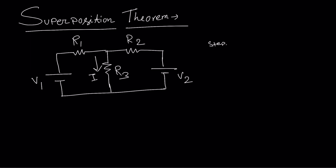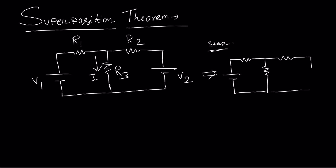Step one: we draw the circuit with only voltage source V1. Now what do we need to do with voltage source V2? We need to replace it by its internal resistance. As I explained in previous videos, the internal resistance of a voltage source is zero — so this will be a short circuit. With R1, R2, and R3 in the circuit, due to voltage source V1, we consider currents I1, I2, and I3 flowing through the respective branches. These currents I1, I2, and I3 are due to voltage source V1 only.